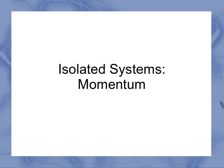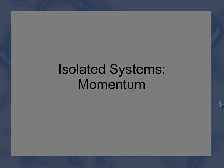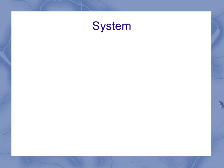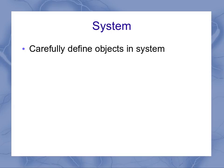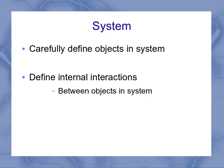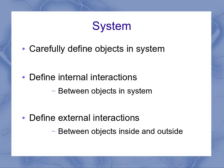Now let's look at the concept of isolated systems from a momentum perspective. Whenever you start talking about a system, the first thing you have to do is carefully define which objects are in the system. We do this because we need to define the internal interactions, which are those interactions between objects in the system, and external interactions, which are between objects that are inside and a second object outside.